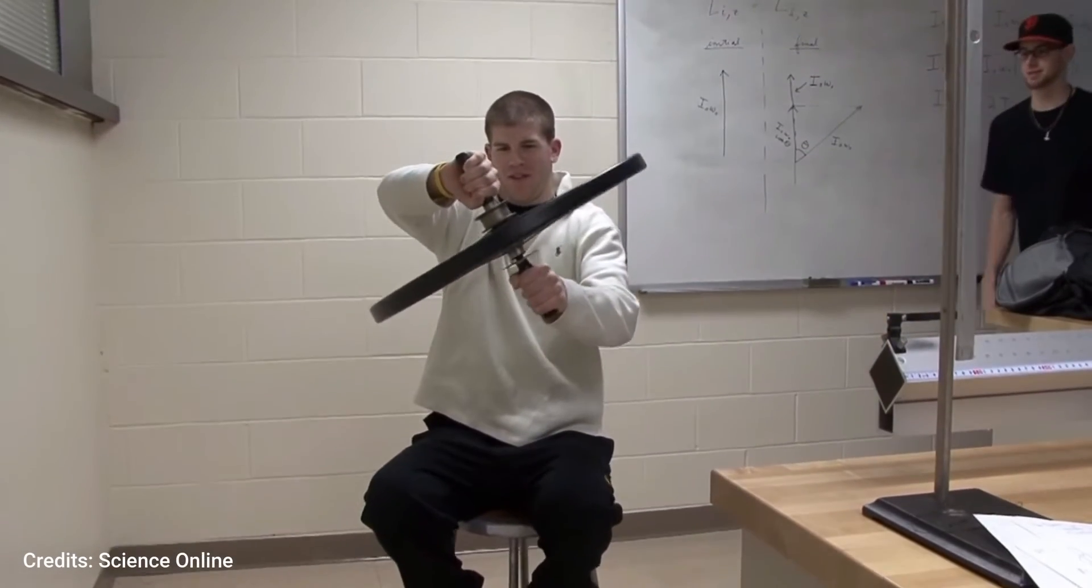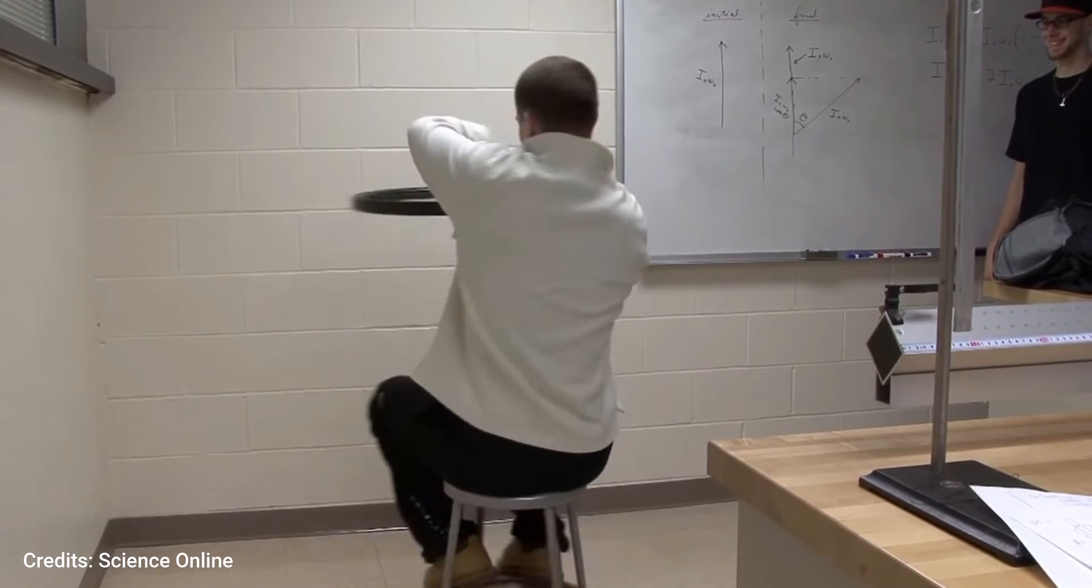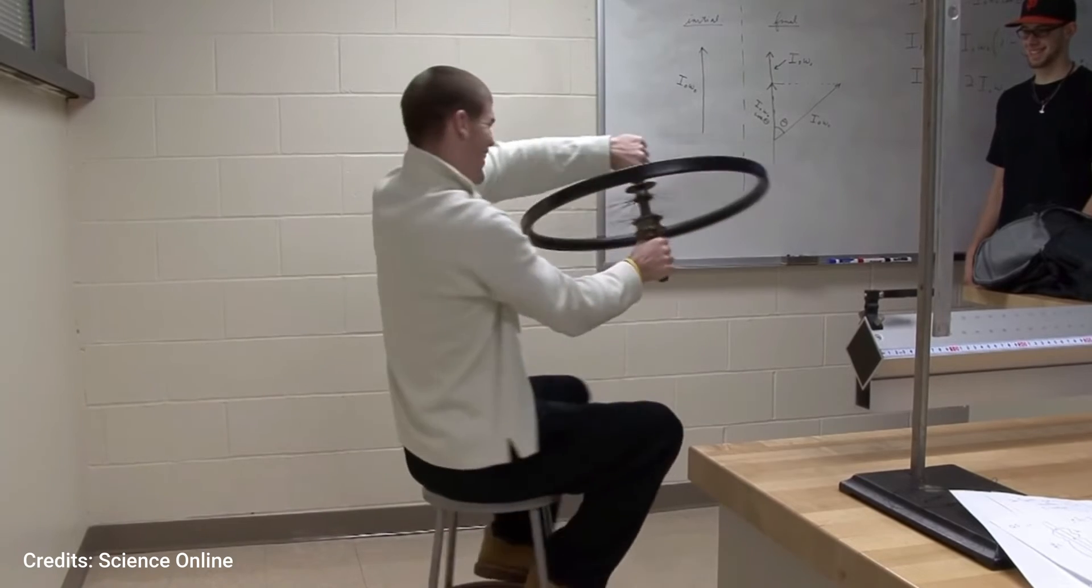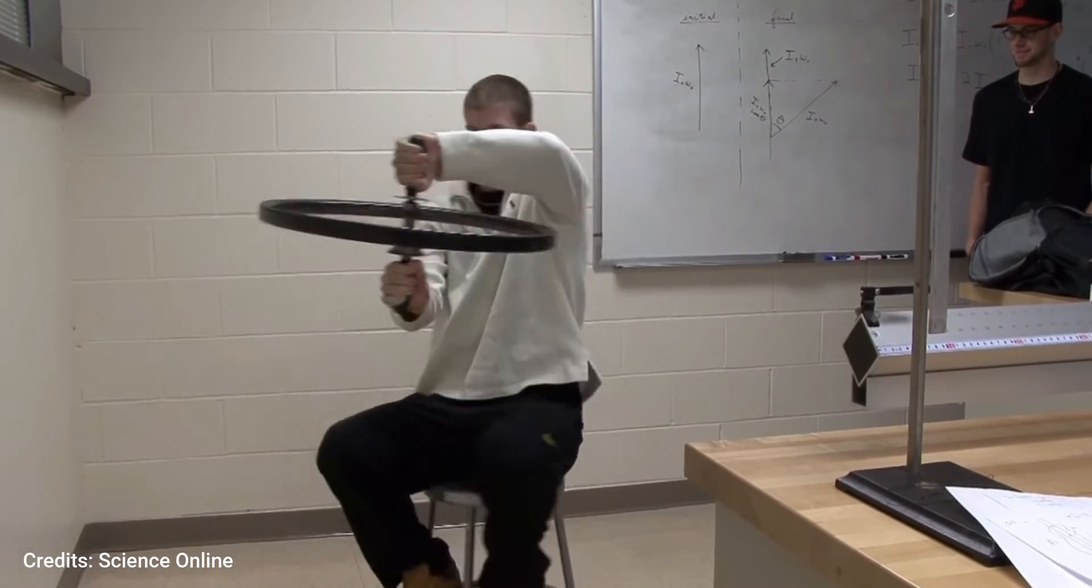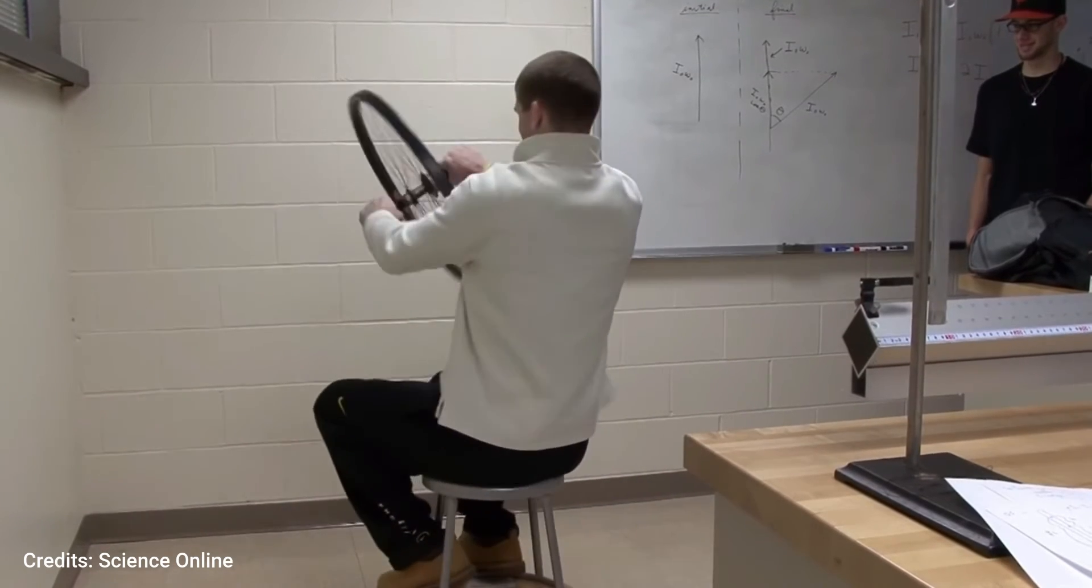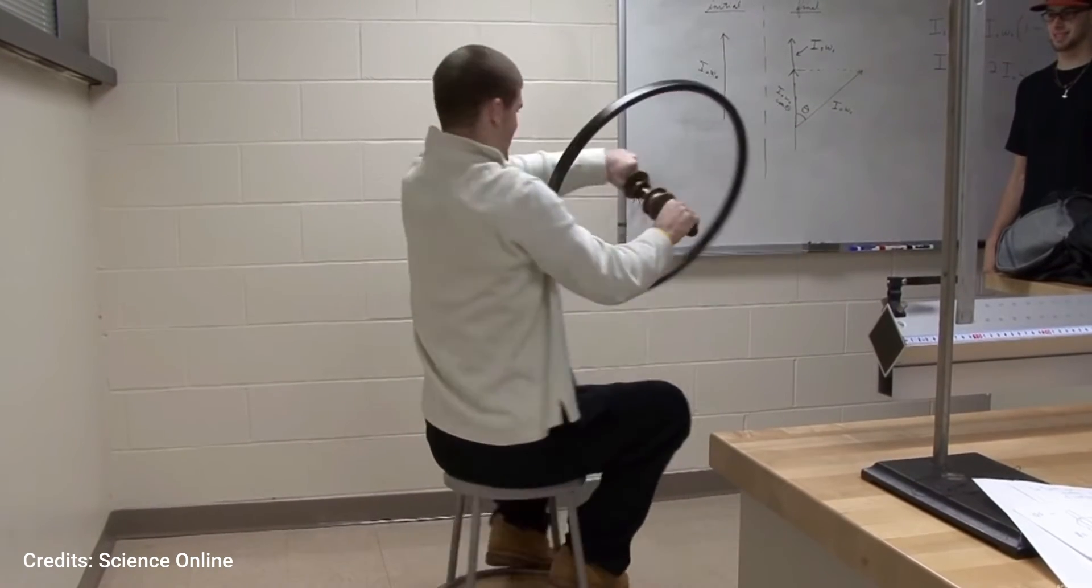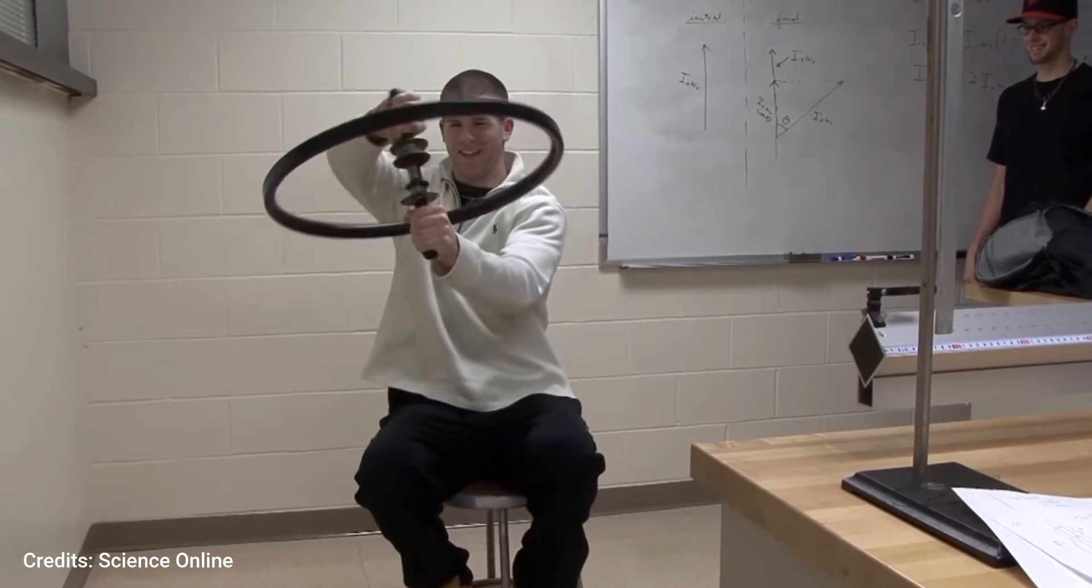A great classroom demo of this principle is outlined in Feynman's textbook. Here, the wheel is analogous to an external torque. When the wheel is flipped, the applied external torque changes sign. This change in external torque goes into imparting a change in total angular momentum of the instructor, causing him to rotate or move on. A very neat experiment indeed to do in any classroom setting.